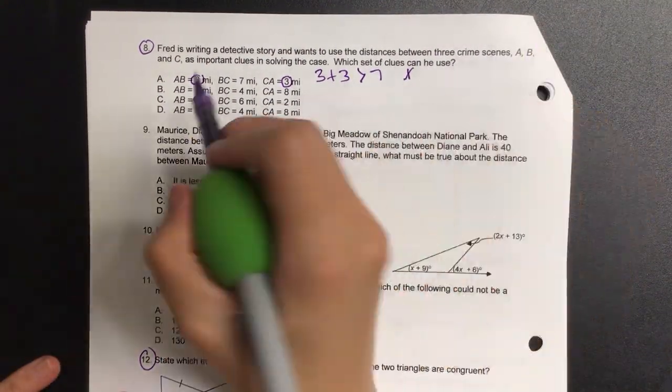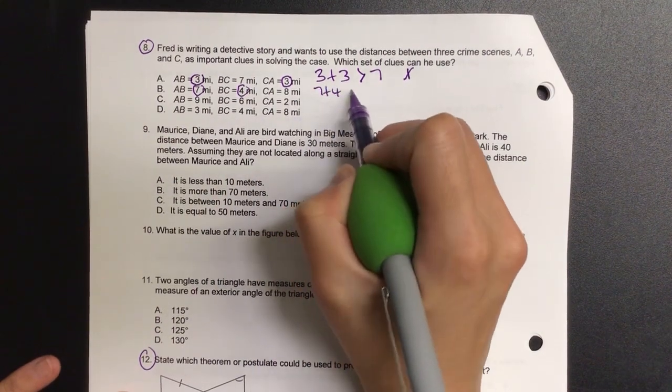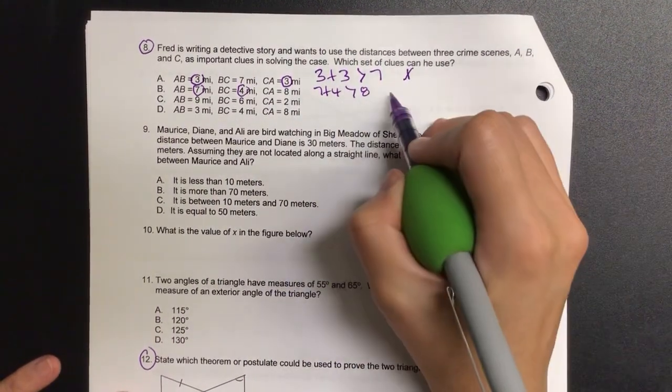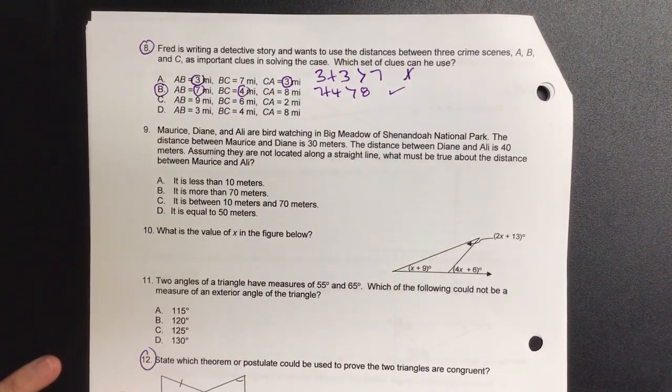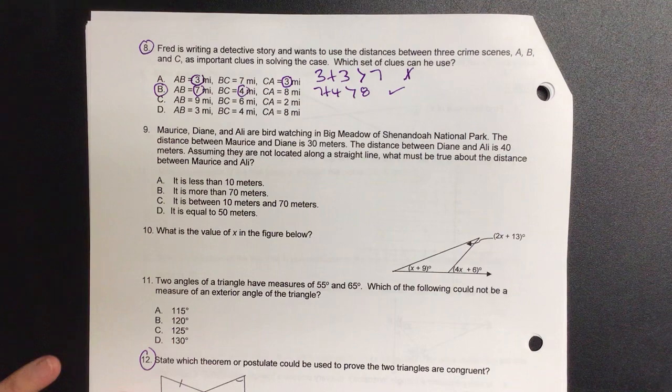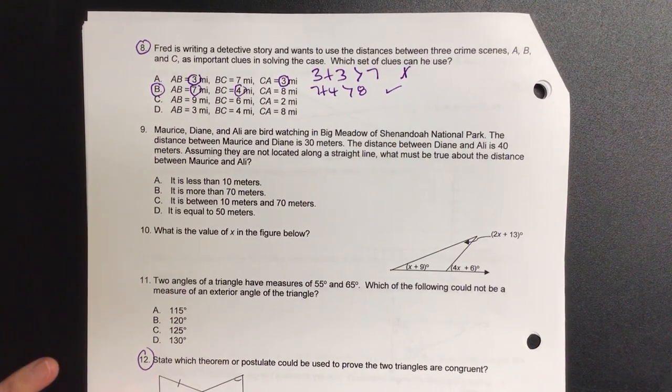On B, the two smaller side is 7 plus 4. So 7 plus 4 must be bigger than 8. Is that true? Yeah. So I can stop right there and say, hey, I have my B. Now, when you do check C and D, it's not going to work out. So I think we're good with the B. Everyone good with that? That's a good reminder.